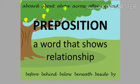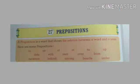You can see some examples here. About, above, across, after, before, behind, below, beneath, beside, by. These all are the examples of a preposition. So students, we have learned that a preposition is a word that shows a relation between a word and a noun.